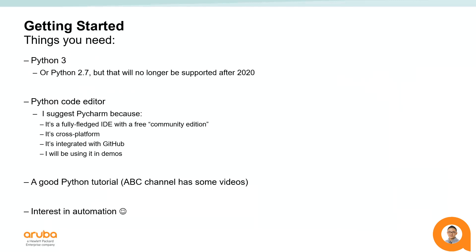If you don't already know Python, find a good tutorial and learn the basics. As I mentioned earlier, ABC has some videos that teach you how to write basic Python. Once you've learned Python, you'll be able to follow along — in the next video of this series, I'll show you how to write a Python script to automate some REST API interactions with an Aruba switch. That brings us to the conclusion of today's video. Thanks for watching, and see you next time.